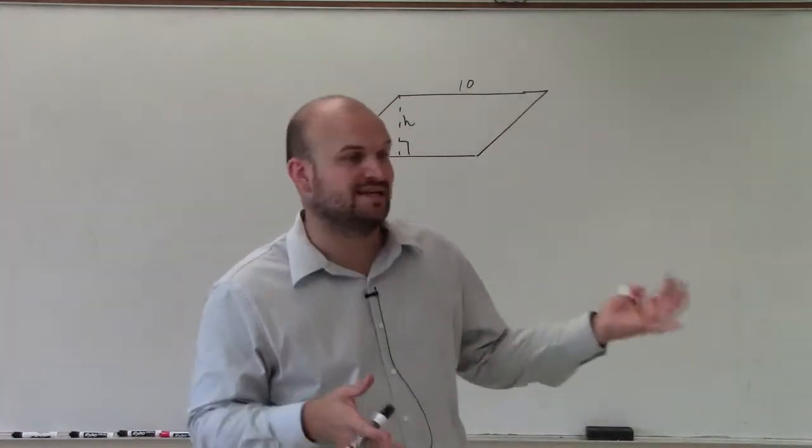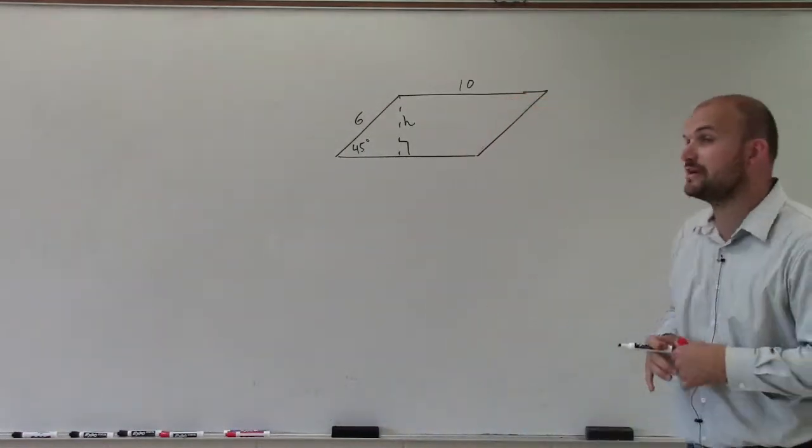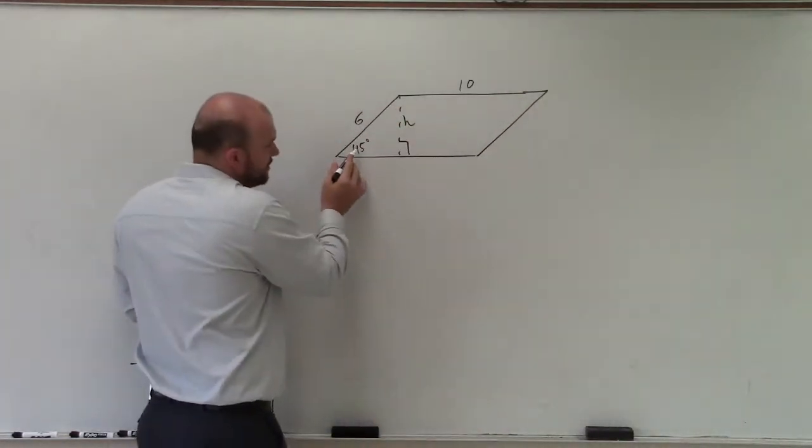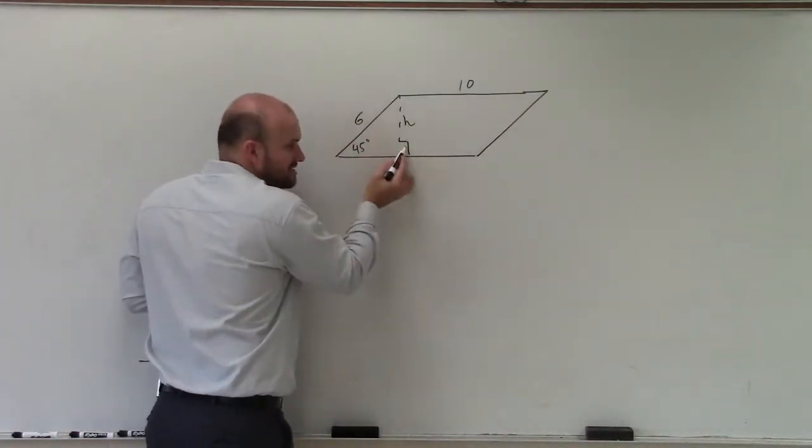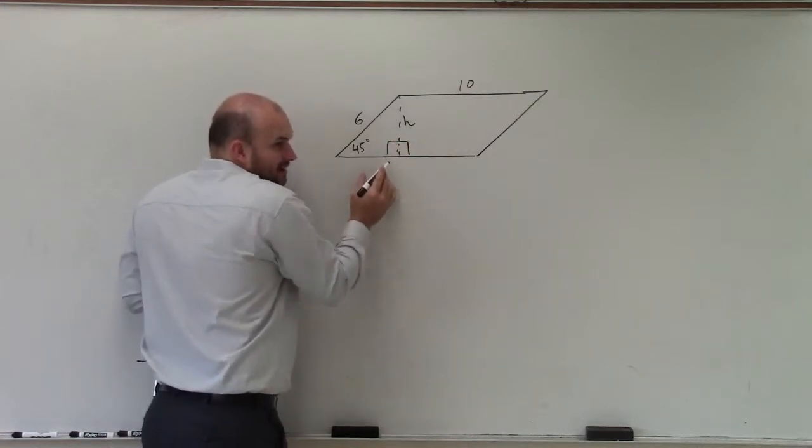This would be a very common problem when we're getting into determining the area and perimeter and so forth. We're going to be using special right triangles a lot. So it's very important to look at this. I have a 45 degree triangle. I know that this is perpendicular because it's 90 degrees. So if it's 90 degrees over here, then I know it's also 90 degrees on the other side.